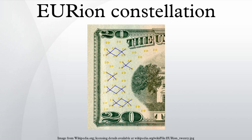On some U.S. bills, they appear as the digit zero in small yellow numbers matching the value of the note. On Japanese yen, these circles sometimes appear as flowers.